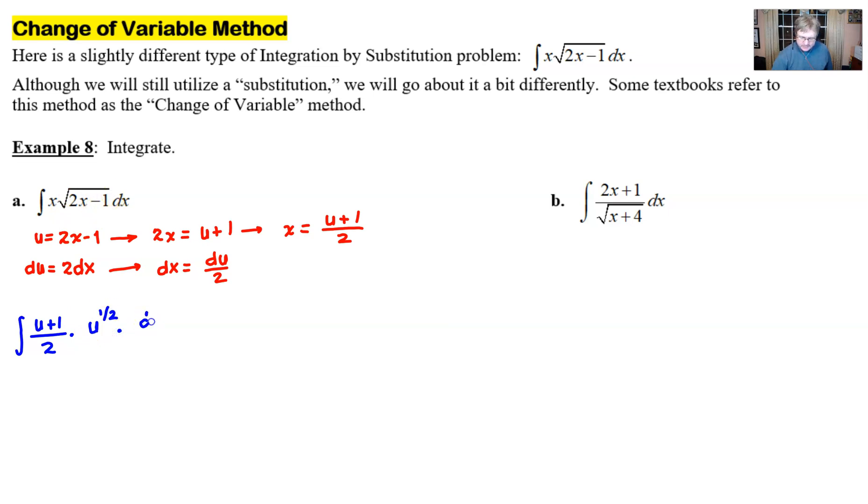Know that the u is still 2x minus 1, so under a radical that's u to the half, and then this dx is now du over 2. And what you have now is something that you can integrate. Now of course, you're going to have to bring the one fourth in front and you're going to want to distribute this u to the half inside of this binomial as you normally would. And that of course gives you u to the three halves plus u to the one half du.